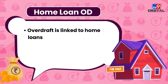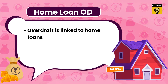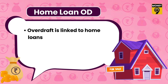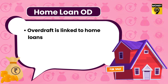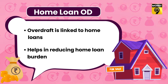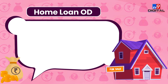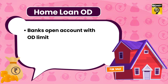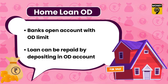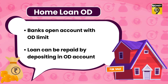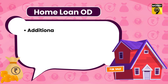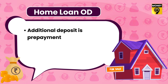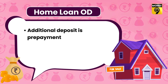What is home loan OD? Home loan OD is a variant of the home loan that integrates the overdraft facility from banks with the standard home loan. This helps in reducing the burden of the home loan. For this, banks open an account for you with an overdraft limit. You can repay your loan by putting extra money in that account. Any additional deposit in the account is treated as prepayment and helps you reduce the unpaid principal and interest cost of the loan.